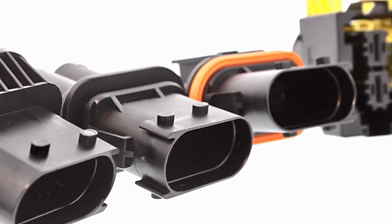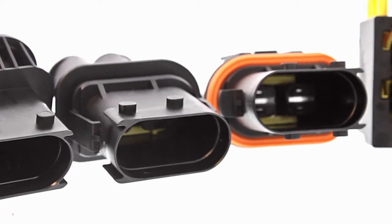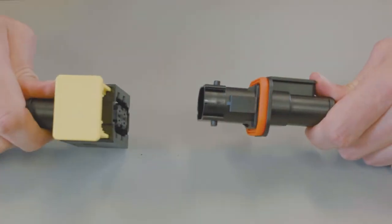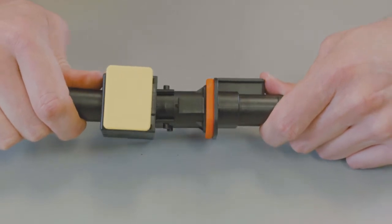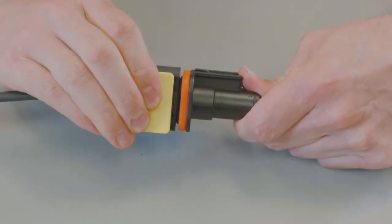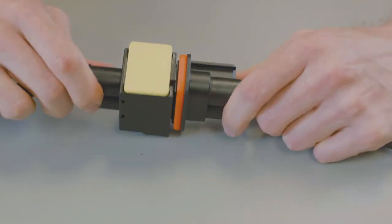All AMP MCP 9.5 two-position connectors are designed to be mated and unmated by hand. Align the receptacle housing with the tab housing and push the two parts together. Push the slide lock on the receptacle housing until you hear and feel a click.